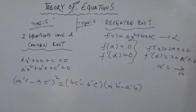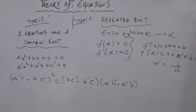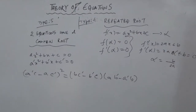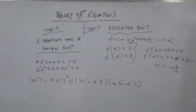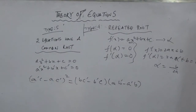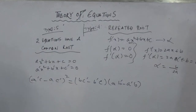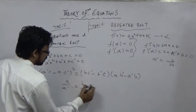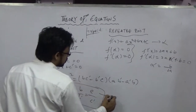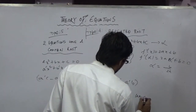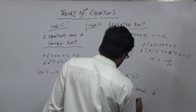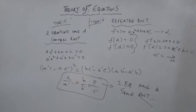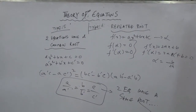Having the same root is different from having a common root. For two quadratic equations to have the same roots, the condition is a/a' = b/b' = c/c'. If this proportionality condition is satisfied, the two equations have the same roots.